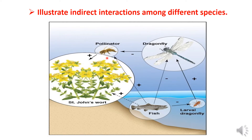The pollinators include dragonflies, budge flies, flies, and bees. These pollinators interact with plants. The dragonfly is one of these pollinators.